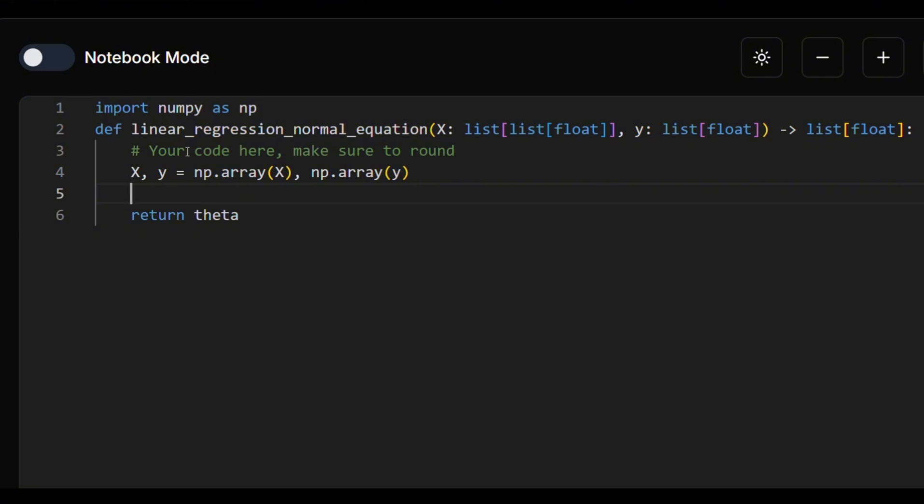So what we need to do is theta equals, we said X transpose, right, times X. So this is a matrix multiplication. Now we need to take the inverse of this thing. So what we do is np.linalg.inverse, that's how we invert a matrix in NumPy. And this is by the way, this is a matrix multiplication, this symbol. So we have the first term multiplied by X transpose, that's the second term, multiplied by y.